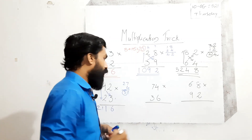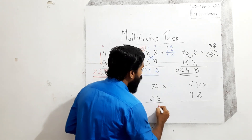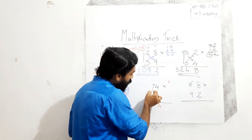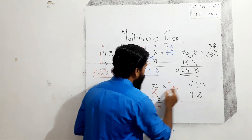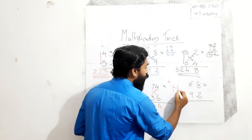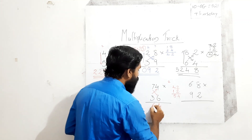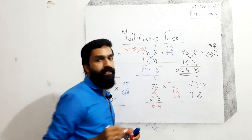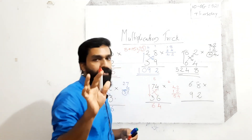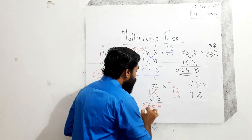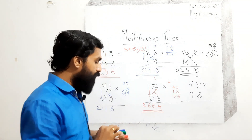Next: 74 into 36. Unit places: 6 into 4 is 24 — write 4, carry 2. Cross multiplication: 7 into 6 is 42, and 3 into 4 is 12. Add: 42 plus 12 is 54. 54 plus carry 2 is 56 — write 6, carry 5. Tens place: 7 into 3 is 21. 21 plus 5 is equal to 26. Write it. Answer: 2664.